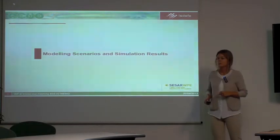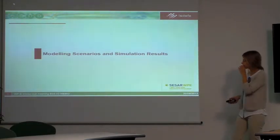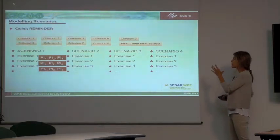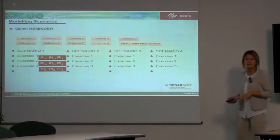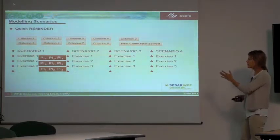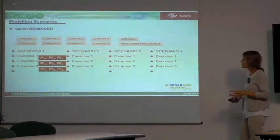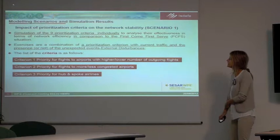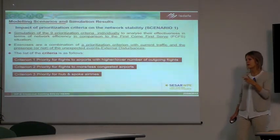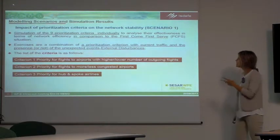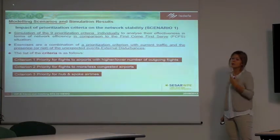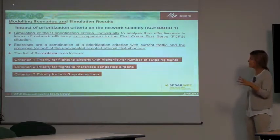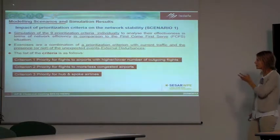Now I'll focus on modeling scenarios and simulation results. As a quick reminder: we have nine prioritization criteria with first-come, first-served as the baseline for comparison, four modeling scenarios, different sets of exercises per scenario, and indicators per exercise to be compared. The first scenario is called 'Impact of Prioritization Criteria on Network Stability,' with the objective to simulate each of the nine criteria to analyze effectiveness in terms of network efficiency compared to first-come, first-served.